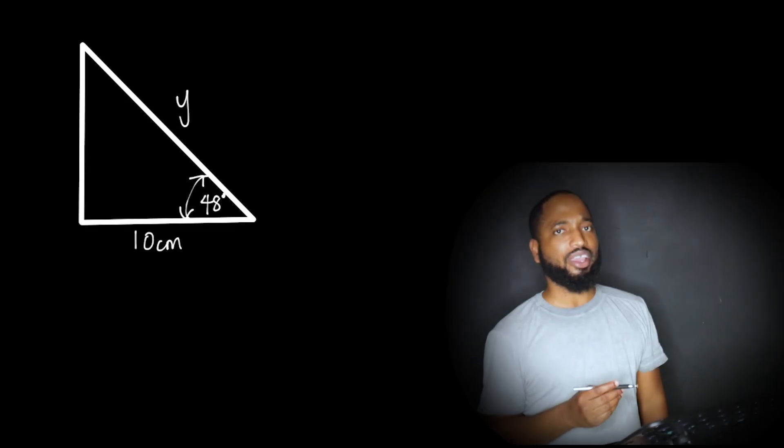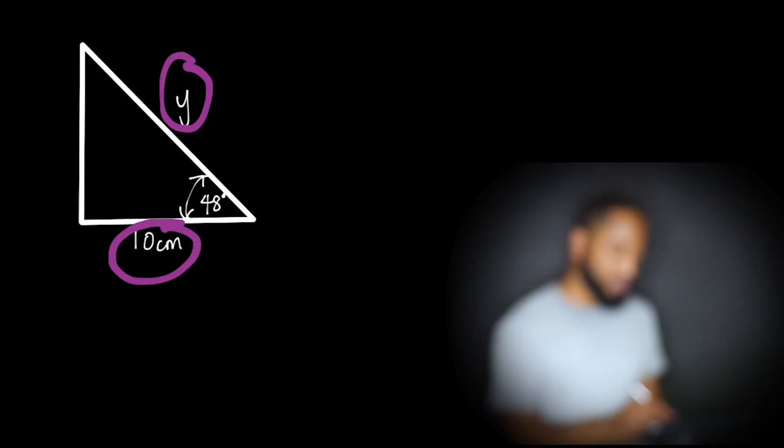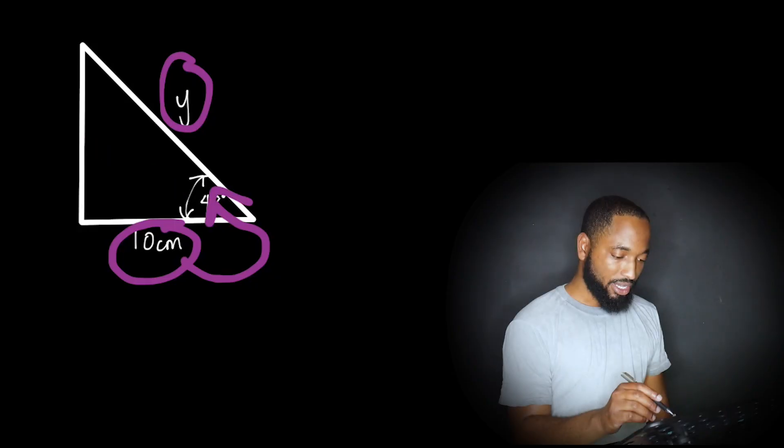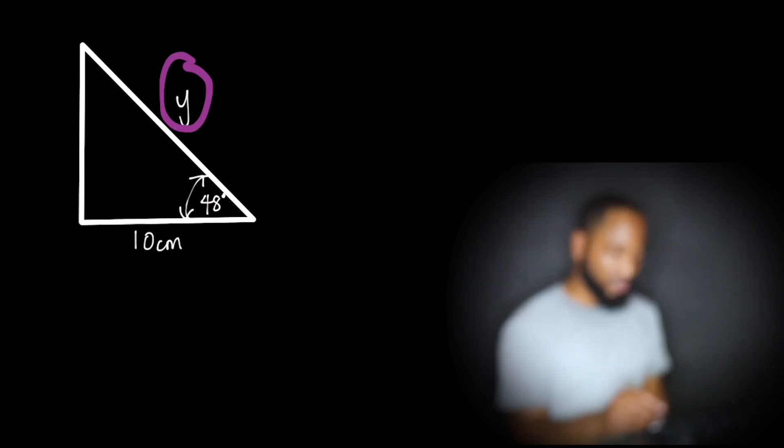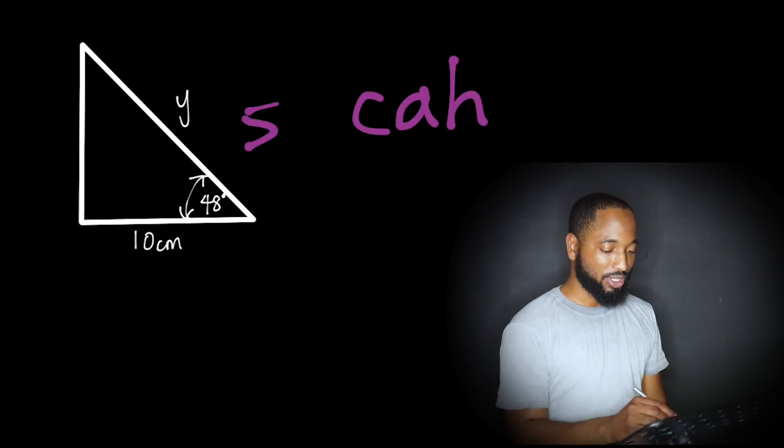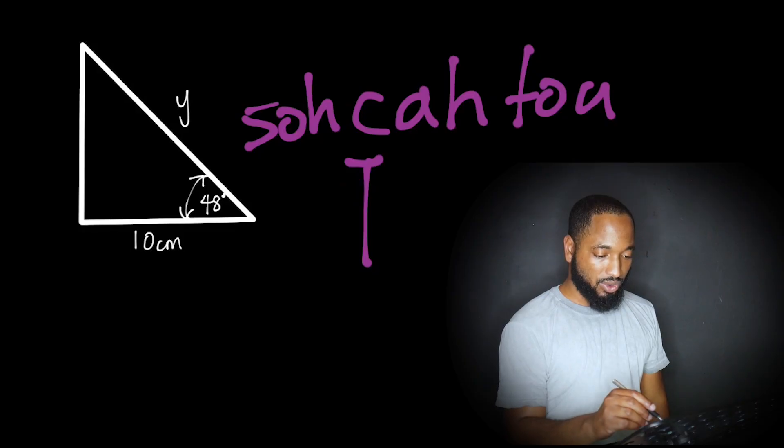Alright, so this is simple as well. Let's find out what sides we have. We have the hypotenuse. We have the, who are you? You are right next to the angle. So you must be the adjacent. So we have the adjacent and the hypotenuse. Adjacent and hypotenuse, that's cosine from SOH CAH TOA. So we're going to use cosine, right?